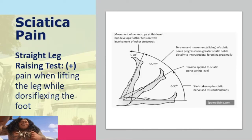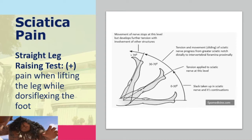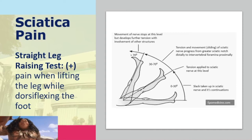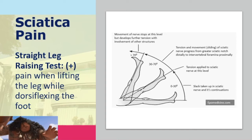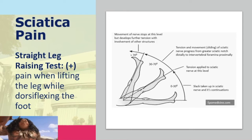To test for sciatica pain, there is the straight leg raising test. This is positive when there is pain upon lifting the leg while dorsiflexing the foot — meaning the foot of the patient is pointing towards the body. If pain is positive, you would think there is a problem with the sciatic nerve. This position causes extension of the sciatic nerve, and if it is irritated, it causes pain during the straight leg raising test.